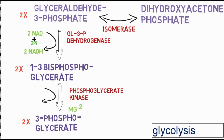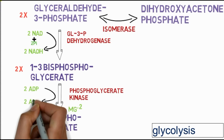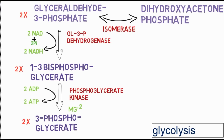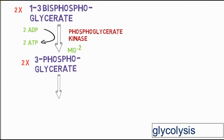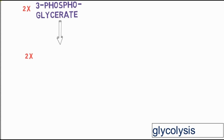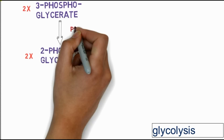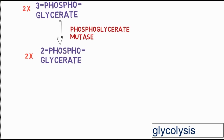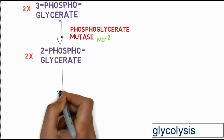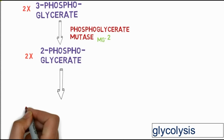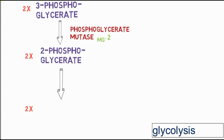1,3-bisphosphoglycerate is converted into 3-phosphoglycerate by the enzyme phosphoglycerate kinase, which contains Mg²⁺ as a cofactor. In this reaction, 2 ADP molecules are converted into 2 ATP molecules. Then 3-phosphoglycerate is converted into 2-phosphoglycerate by the phosphoglycerate mutase enzyme, which also contains Mg²⁺ as a cofactor.